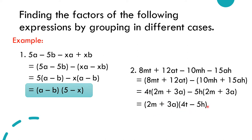The factored result is (2m plus 3a)(4t minus 5h). This is the complete factored form of 8mt plus 12at minus 10mh minus 15ah.